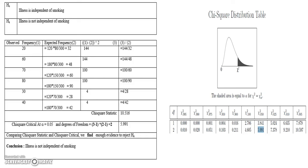Comparing the chi-square statistic (10.516) and the chi-square critical value (5.991), we find that the chi-square statistic is greater than the chi-square critical value. Therefore, the statistic falls in the rejection region and we have enough evidence to reject the null hypothesis — meaning illness is not independent of smoking.